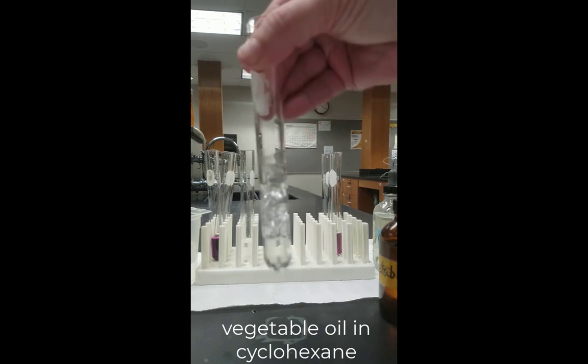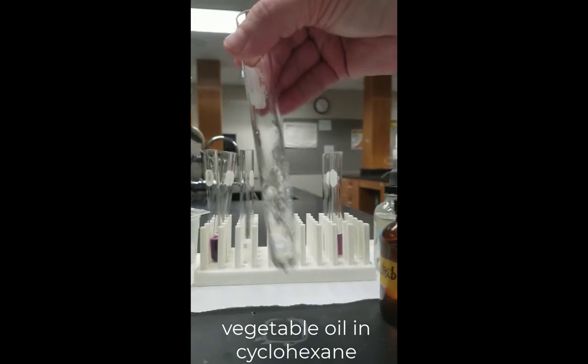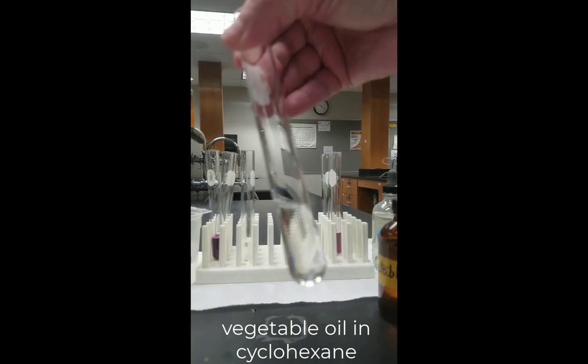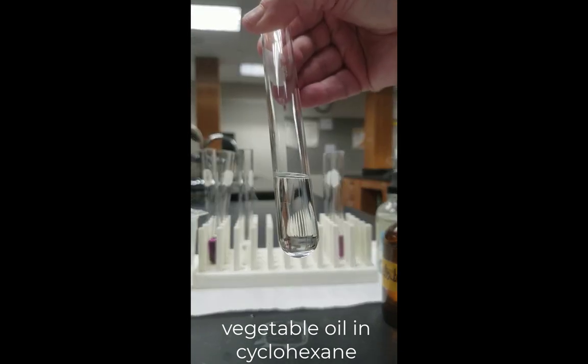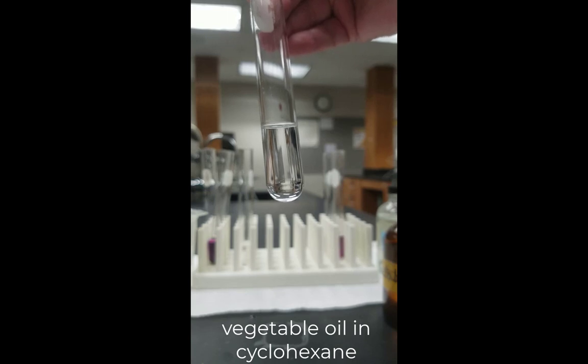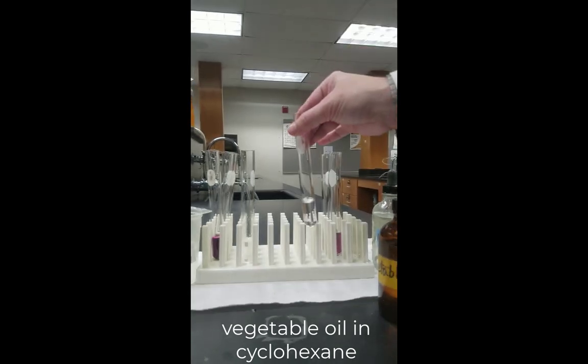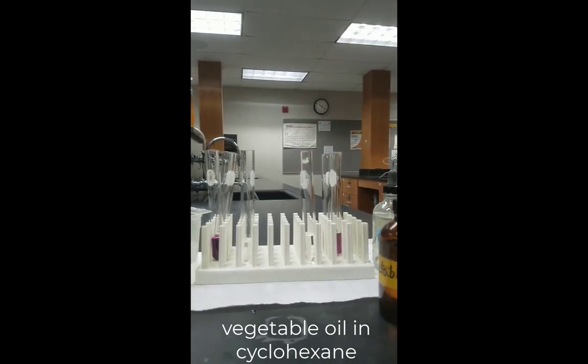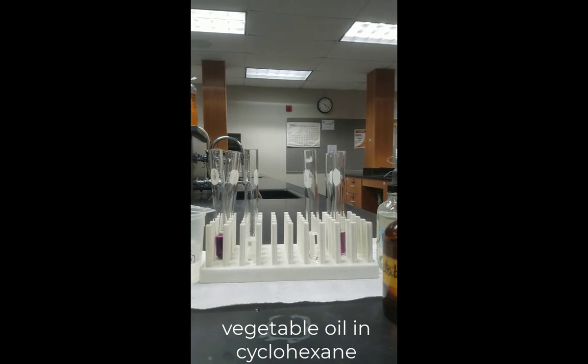Now, agitating the vegetable oil in the cyclohexane, you'll notice it has a considerably different kind of a texture and behavior than it did for water. You don't see any tiny bubbles. You don't see two layers. It's one nice homogeneous solution. Everything is completely mixed in.